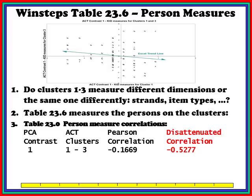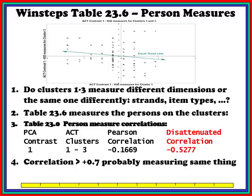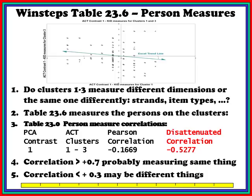Maybe the remedial action is as simple as rescoring one set of items in the opposite direction — perhaps that was the problem. This can happen when positive and negative items appear on a survey and someone doesn't notice, only later discovering that negative items need to be reverse scored. When the disattenuated correlation is bigger than 0.7, we're probably measuring the same thing in both clusters. If the correlation is less than plus 0.3, we're probably measuring different things. There are caveats — for instance, a narrow spread of person measures can reduce correlation — but generally when the disattenuated correlation is less than 0.3, something is definitely going on.